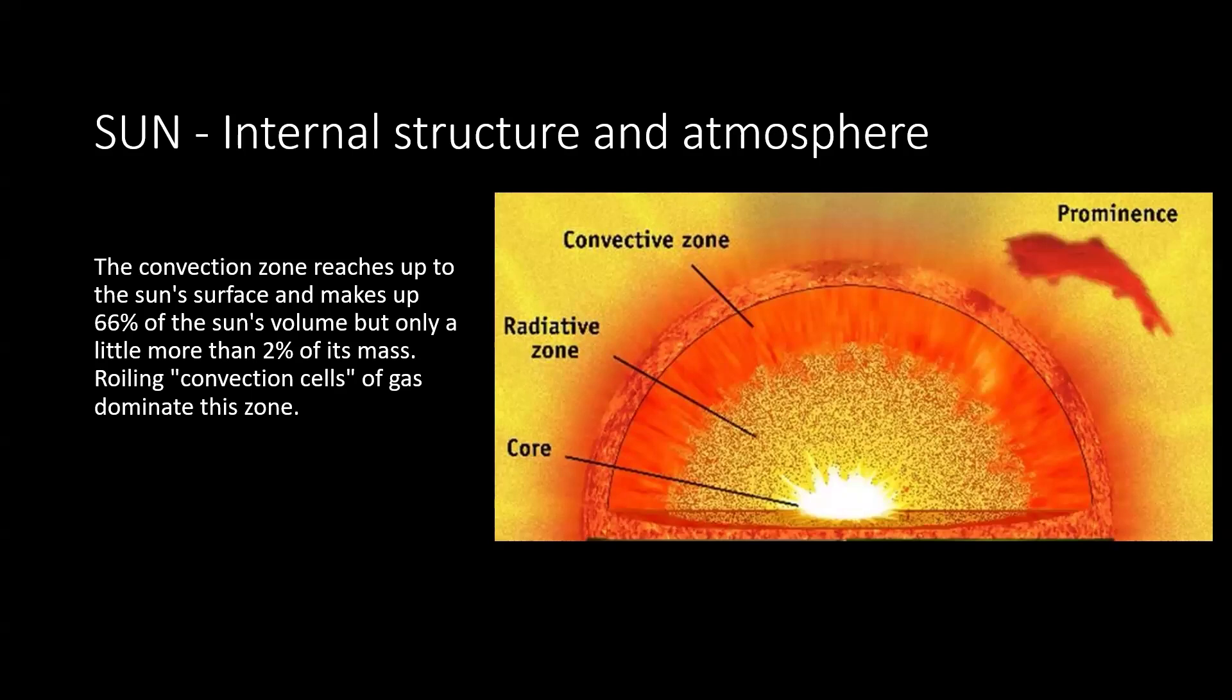Then comes the convection zone, which goes up to the Sun's surface and makes up 66% of the Sun's volume, but only a little more than 2% of its mass. Convection cells dominate this layer. This is the convection zone. It's only 2% of the mass, however, 66% of the Sun's volume. So we're going from very dense to not so dense, lots of small volume to larger volume.